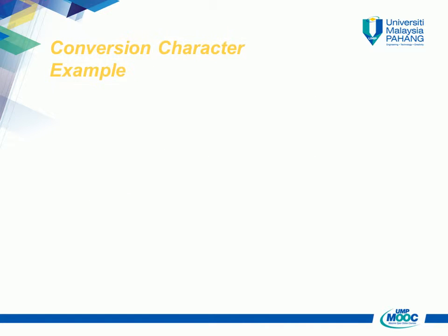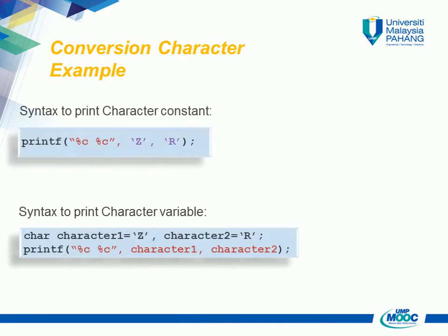Conversion Character Example — Syntax to print character constant: printf("%c %c", 'Z', 'R'). Syntax to print character variable: char character1 = 'Z', character2 = 'R'; printf("%c %c", character1, character2). Output: Z R.